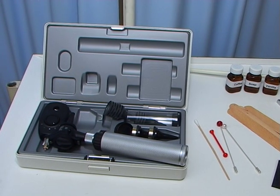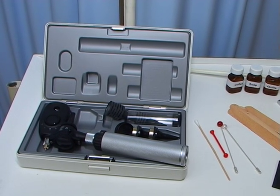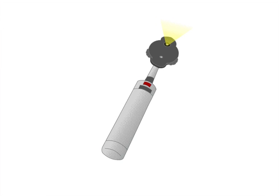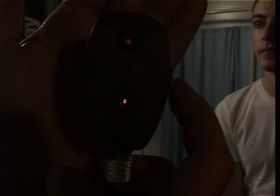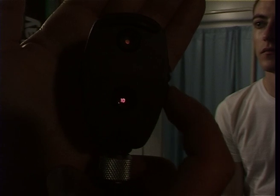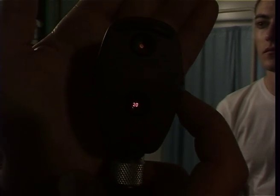The direct ophthalmoscope is a hand-held instrument useful for examining the central part of the retina. It consists of two components: a handle and a head. The handle normally houses the batteries. The head contains a light source and a view hole through which you can rotate a series of convex and concave lenses.